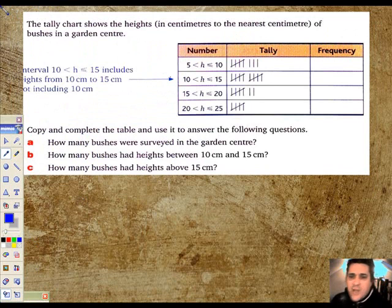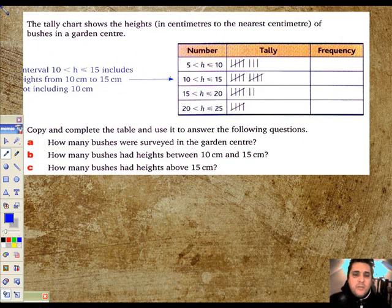Next page. The tally chart shows the heights in centimeters to the nearest centimeter of bushes in a garden centre. Let me just go over what this means here. That means five is less than the height of the bush, but the bush has got to be less than or equal to 10. In other words, I'm really from 6 to 10 here. In the next one, 10 is less than the height, but the height's got to be less than or equal to 15, so really that's 11 to 15. This is 16 to 20, and this is 21 to 25.